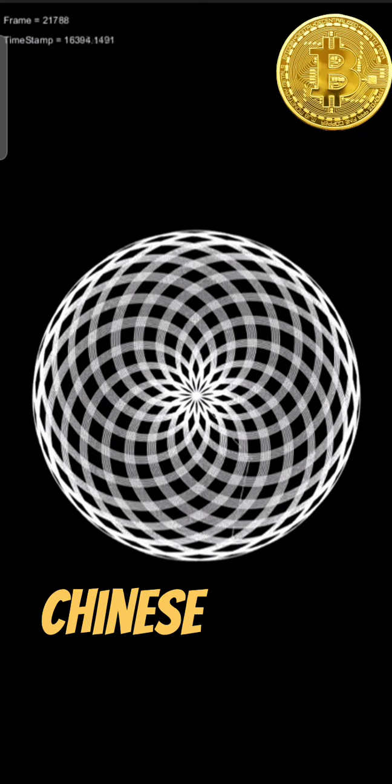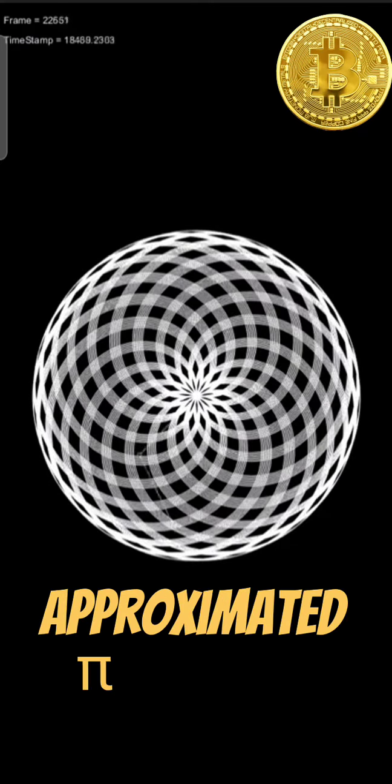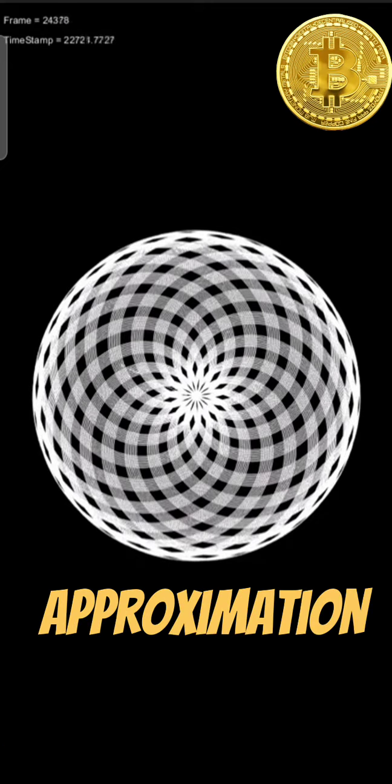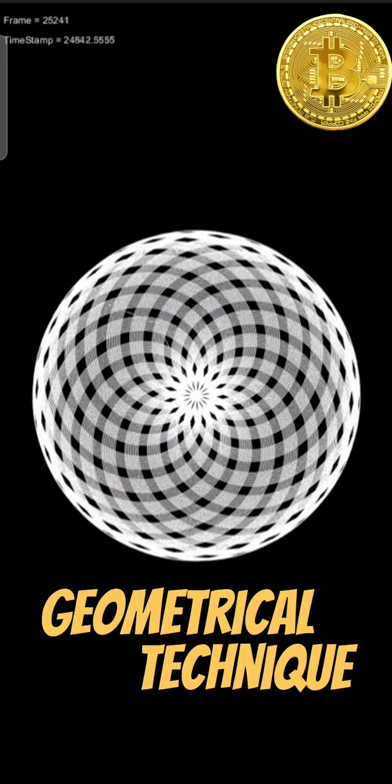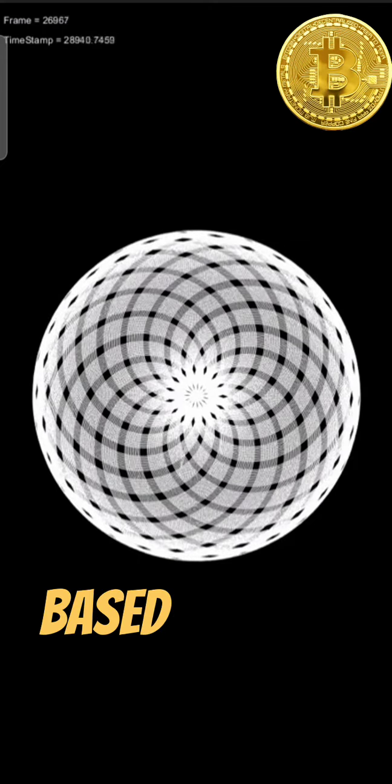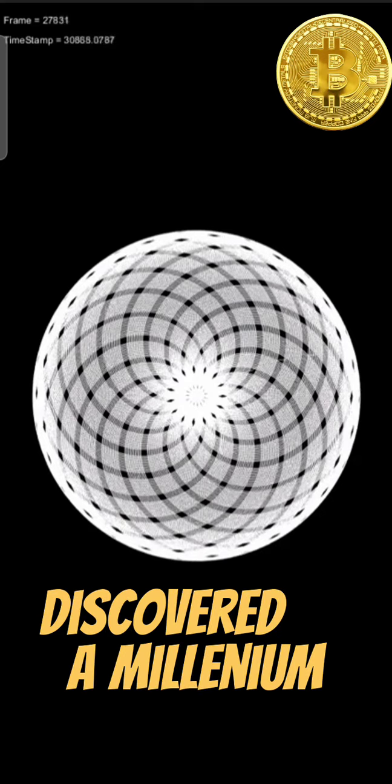In the 5th century AD, Chinese mathematicians approximated pi to seven digits, while Indian mathematicians made a five-digit approximation, both using geometrical techniques. The first computational formula for pi, based on infinite series, was discovered a millennium later.